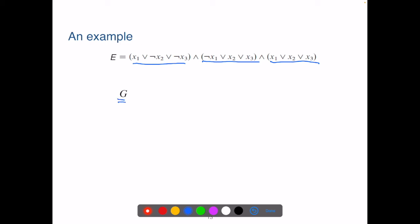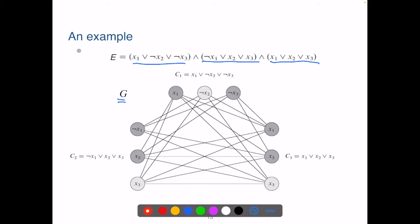Now we need to construct a graph G. So we create a vertex for each variable in each clause. Note that we can have multiple vertices representing the same Boolean variable.